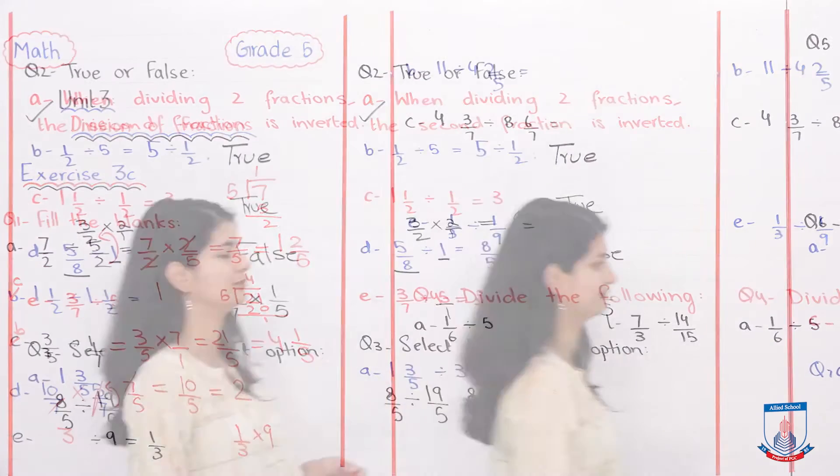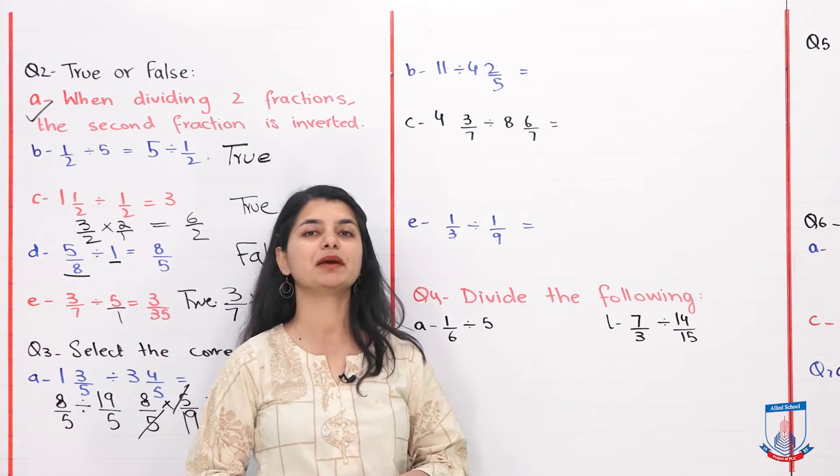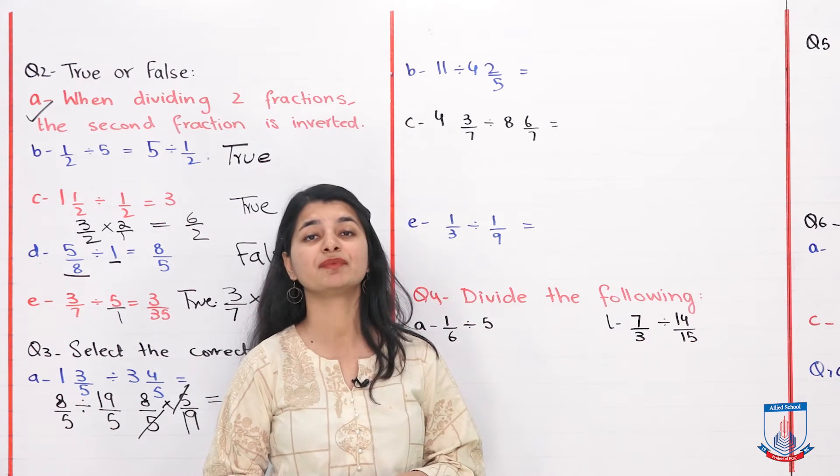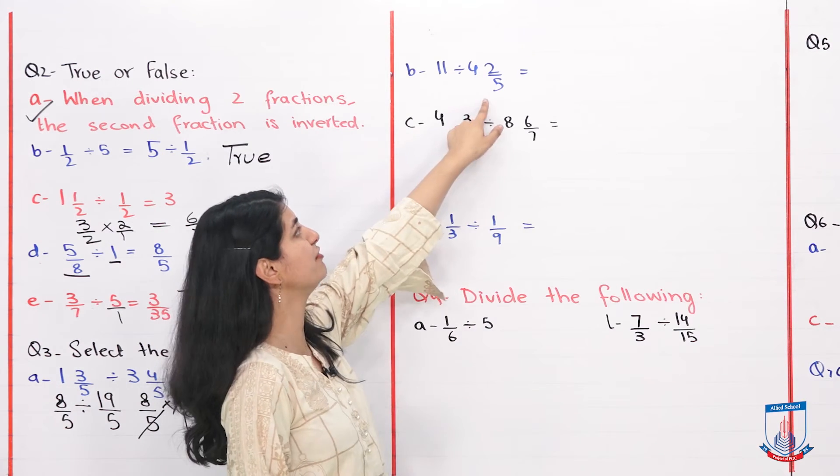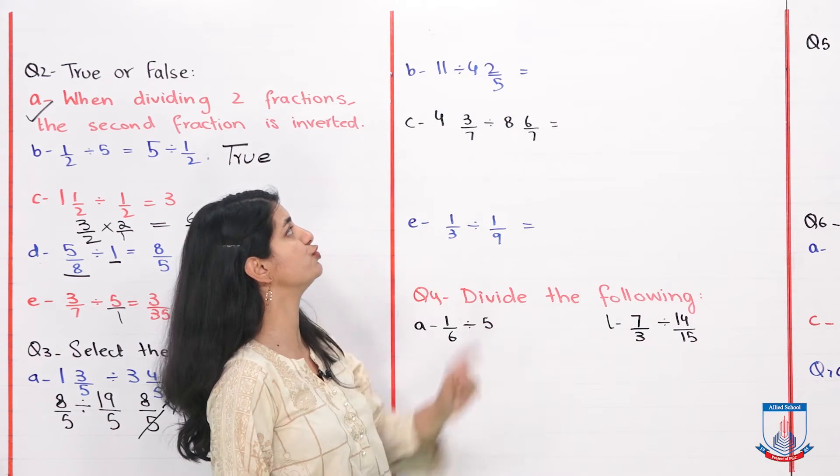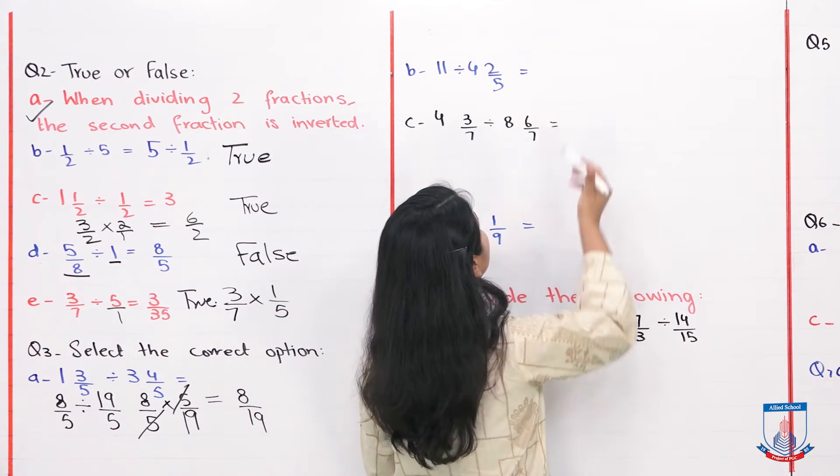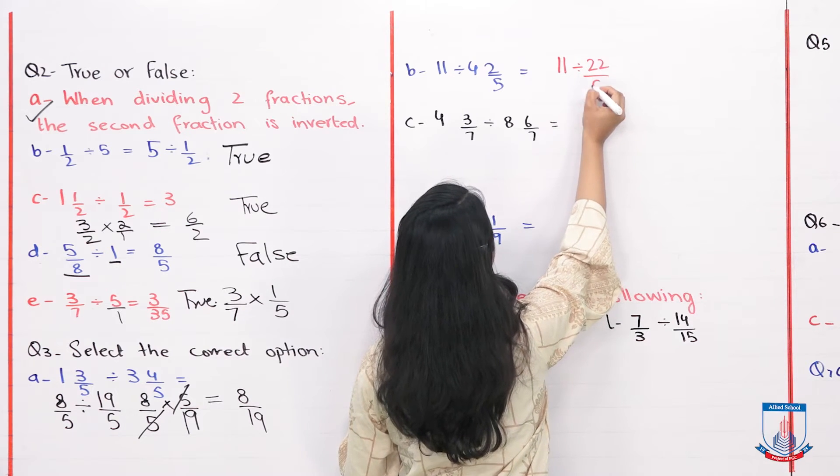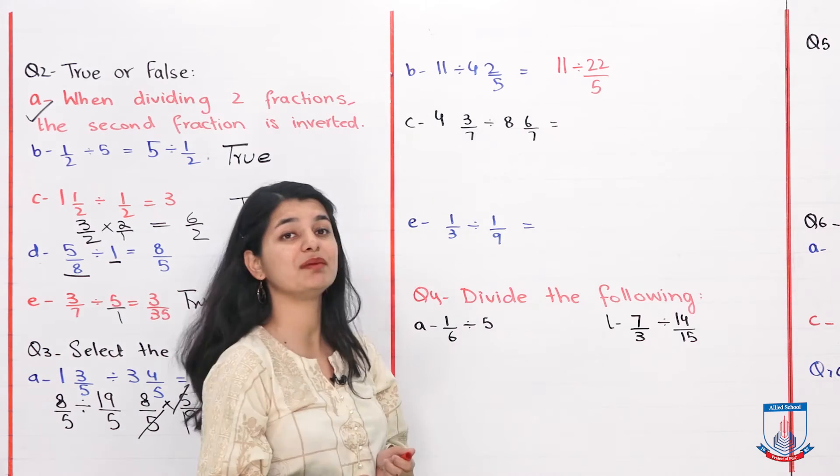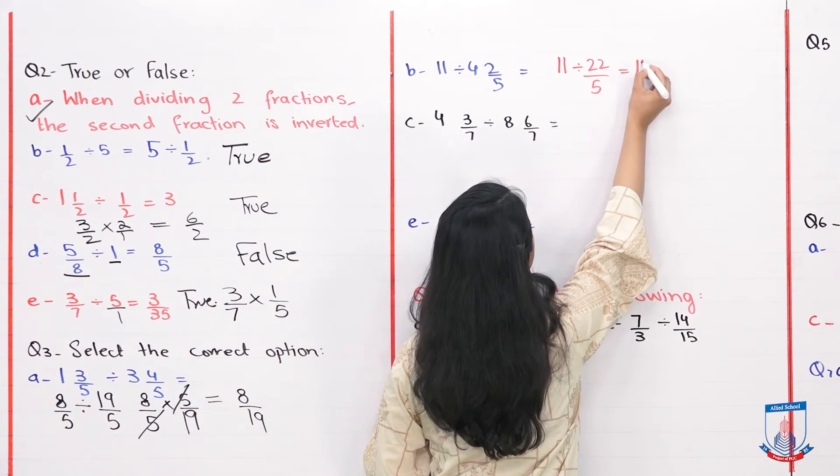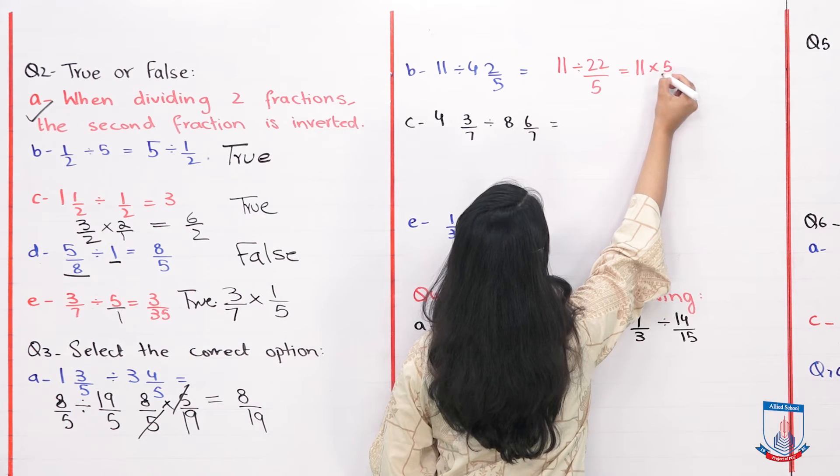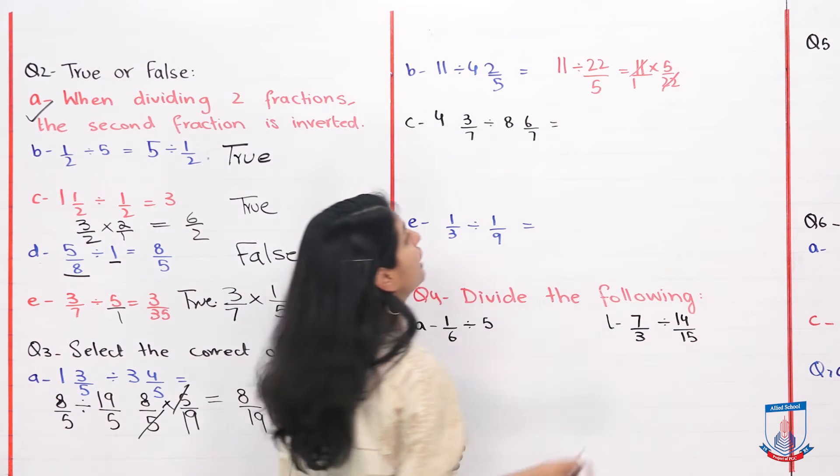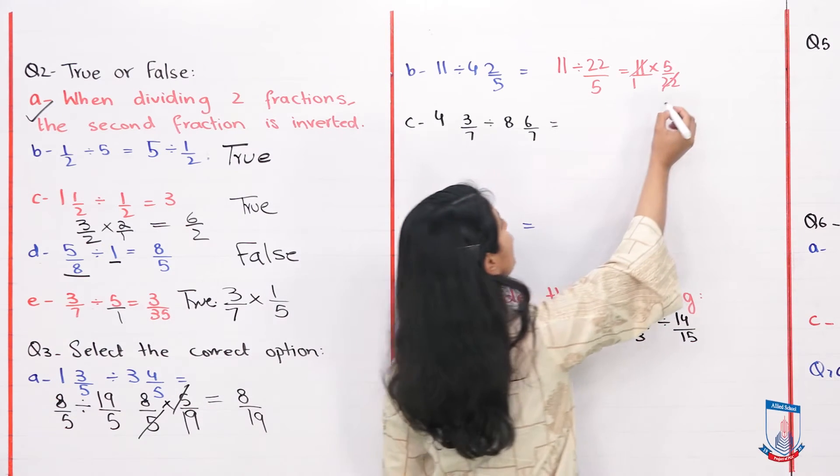Part B: 11 divided by 4 whole 2 by 5. We have 11 over 1 divided by 22 over 5. If we take the inverse, we have 11 into 5 over 22. When we cancel, 11 and 22 both divide by 11. Here 1 will come, here 2 will remain.